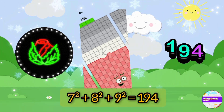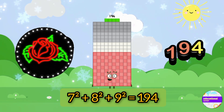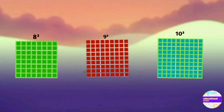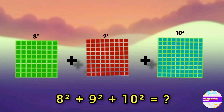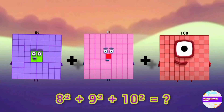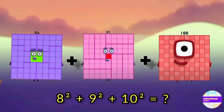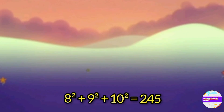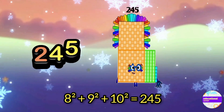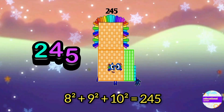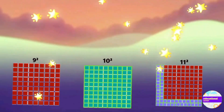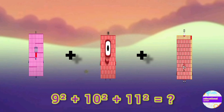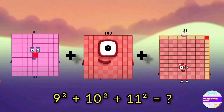The next sequence is eight, nine, ten squares: sixty-four, eighty-one, and one hundred. The answer is two hundred forty-five.